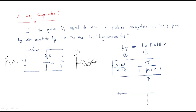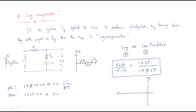If we draw the pole-zero configuration in the s-plane, we have one pole from (1 + βsτ = 0), giving s = −1/βτ, and one zero from (1 + sτ = 0), giving s = −1/τ. So the pole is at −1/βτ and the zero is at −1/τ.